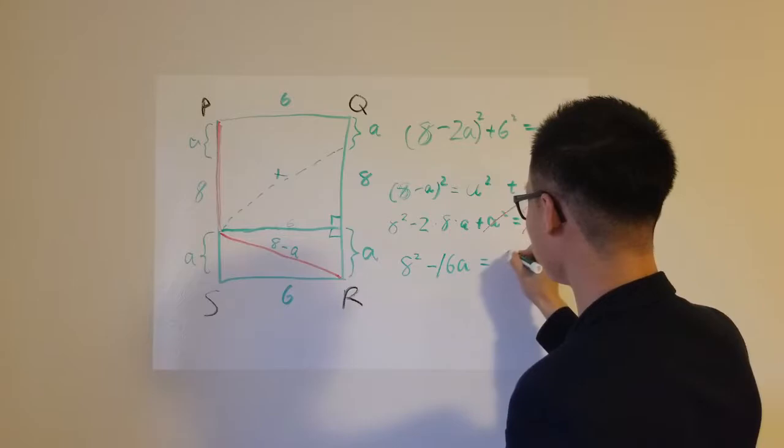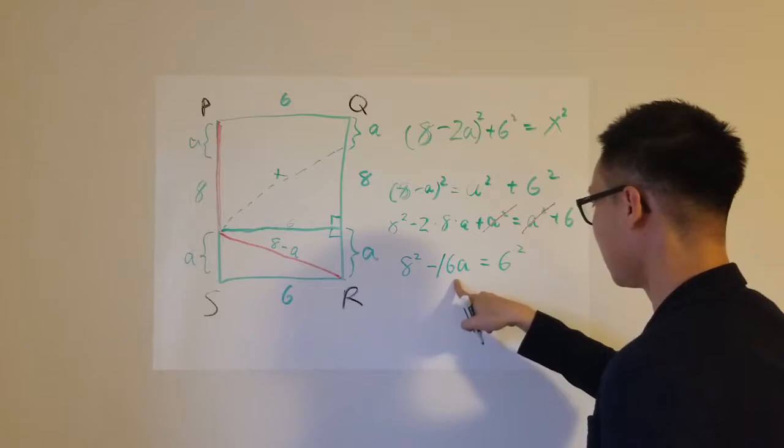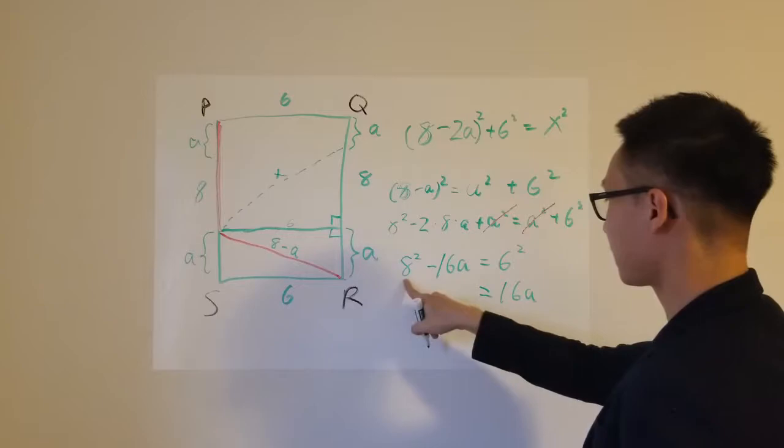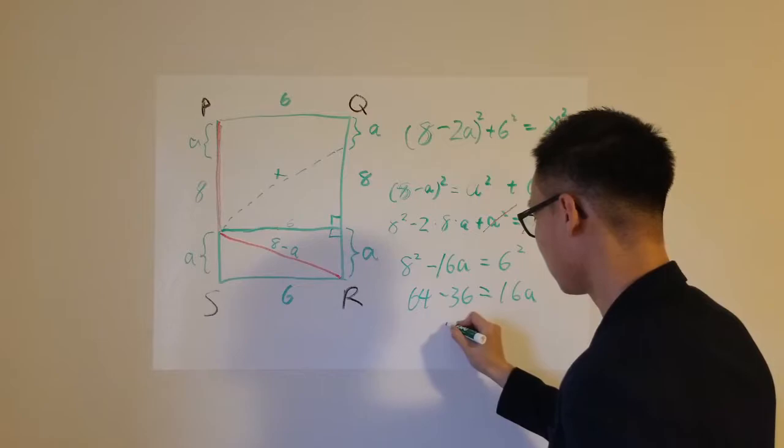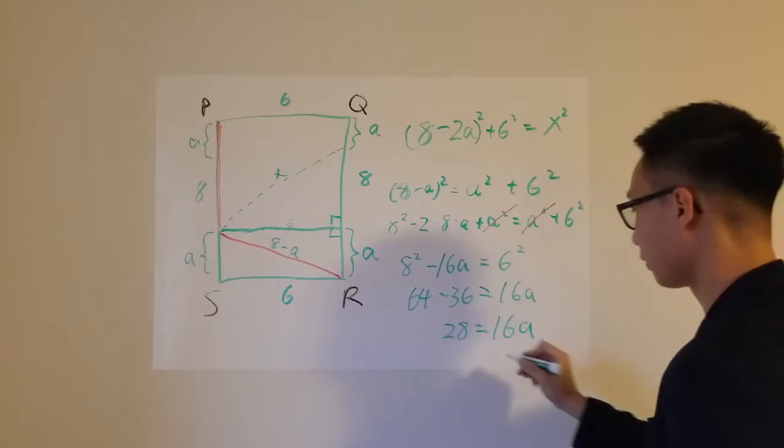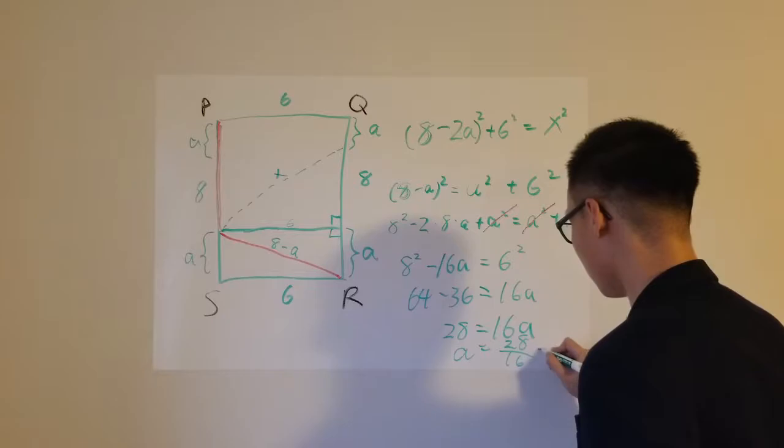So therefore, all you're left with is 8 squared minus 16a is equal to 6 squared. And rearranging this will give you, so let's move 16a to the other side. And this is 64 minus 36. I move this to the other side. So this would give you 28 is equal to 16a. And therefore, a is equal to 28 over 16, which is equal to 7 over 4. That's the first step, finding a.